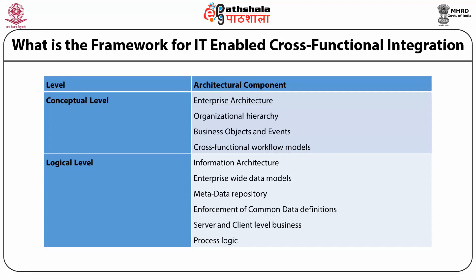The second part of the framework is an information architecture at the logical level, which considers the objects and events of interest throughout the organization and develops an enterprise-wide data model depicting the relationships between such objects and events. The model also identifies business rules, constraints, and data integrity requirements. Information architecture also includes a data dictionary or a metadata repository that helps to organize and enforce uniform data definitions across the organization, implemented on a set of interrelated relational databases that may be centralized or distributed over a number of nodes.